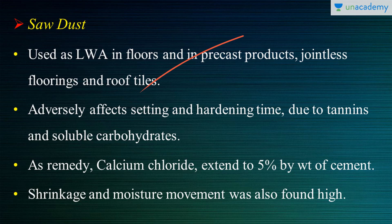Some of the adverse effects are that sawdust affects the setting and hardening time of cement — because of the presence of tannins and soluble carbohydrates. This fluctuates the values for setting and hardening time, which makes it a bit confusing while using sawdust. As a remedial measure for this, calcium chloride at a maximum of 5 percent by weight of cement is used, which has been found successful by researchers.